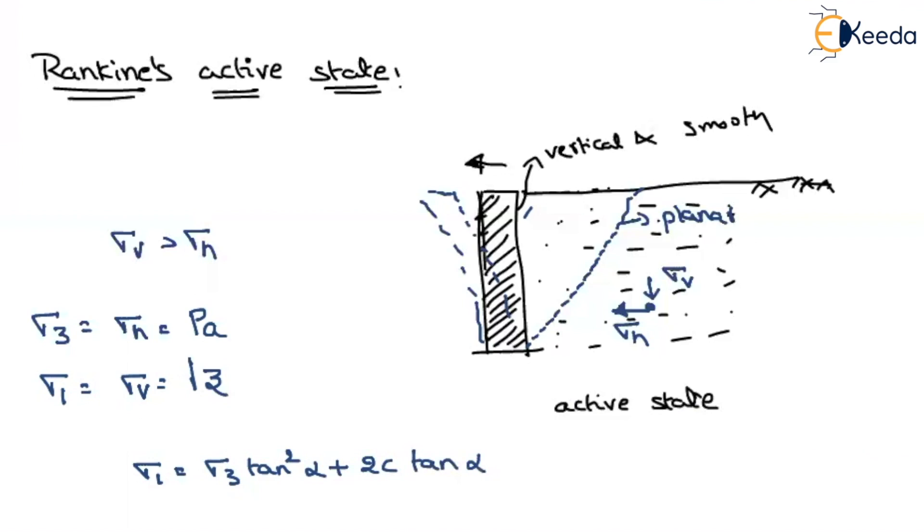Now, if you remember, what are the assumptions of the Rankine's? It is only applicable for cohesionless soils. If it is a cohesionless soil, whatever the c value? Zero. And whatever the alpha value? That can be written as 45 plus phi by 2. So if you substitute those values in the equation.